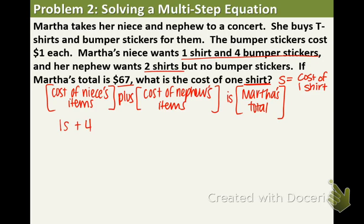We're done with the niece. Now the nephew just wants 2 shirts, and that would be 2S. Is always means equals, and Martha's total is $67. So there's our equation. Do you see any like terms? I see a 1S and a 2S. What's 1S plus 2S? That's 3S. Bring down the plus 4 and bring down the equals 67.